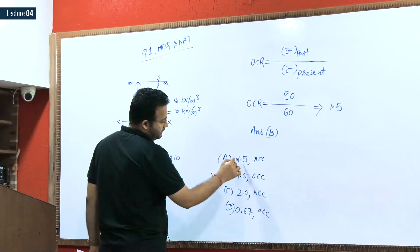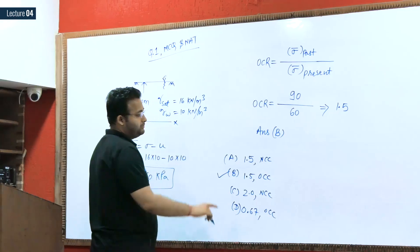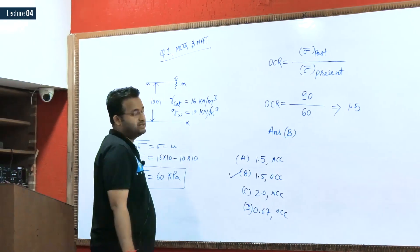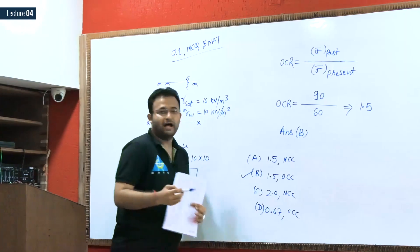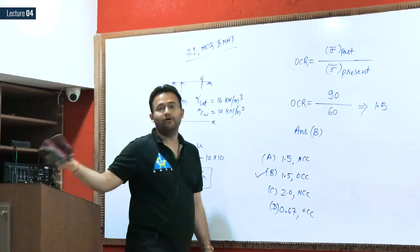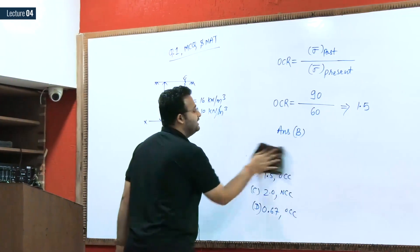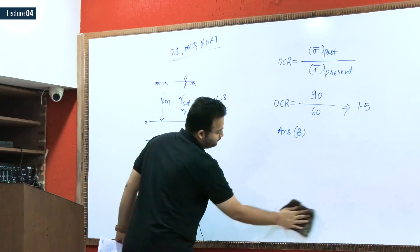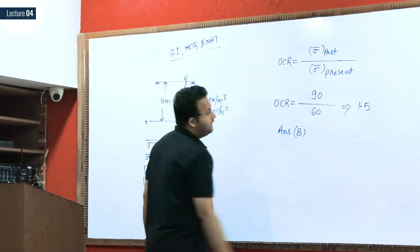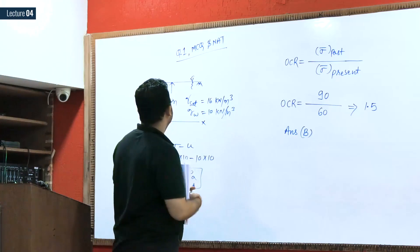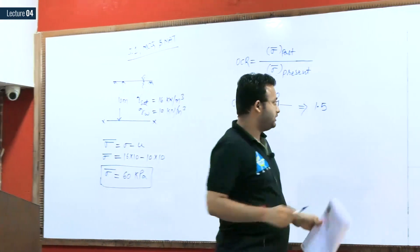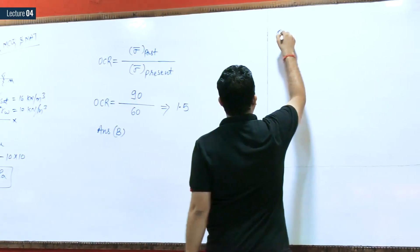So here your answer will be 1.5 OCC soil, because over consolidation ratio is greater than 1. Like that they can ask in the next year or in any coming years. You should be ready. Now after this question number 1, we can discuss question number 2 also.